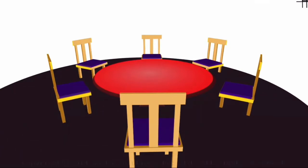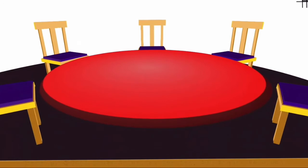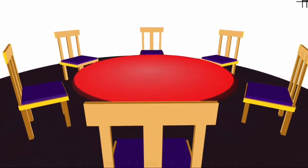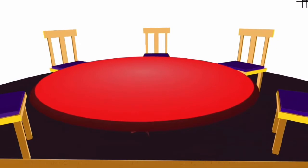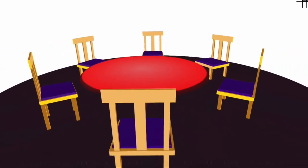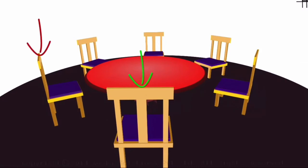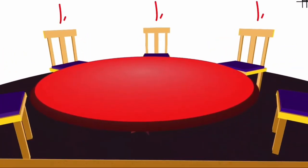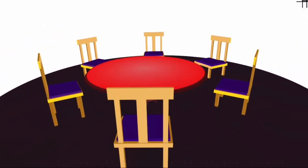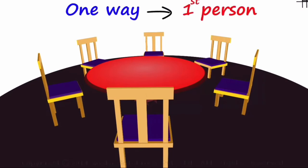To understand the number of ways in which the first person can be seated, assume you are the first person. Let's say you sit on one chair — what do you see? You see three chairs in front, one on your left, and one on your right. Now assume you sit on a different chair. What do you see? Three chairs in front, one on your left, one on your right — it's the same view. Say you sit on a third chair — the view is still the same: three in front, one on your left, one on your right. This tells us that there is just one way in which the first person can be seated on any of the six chairs.